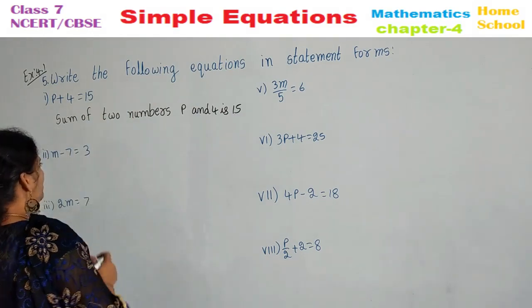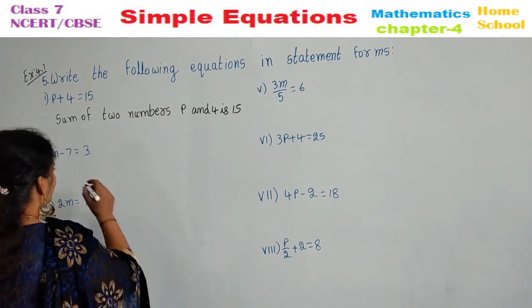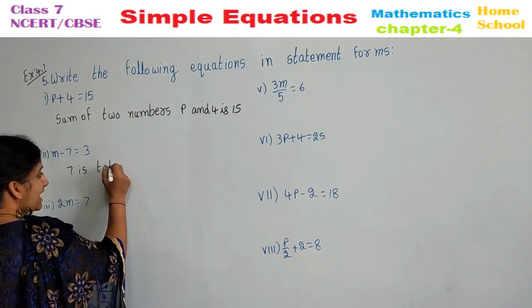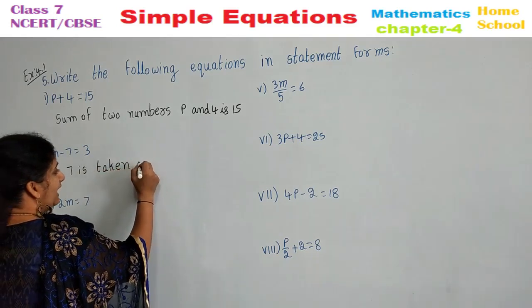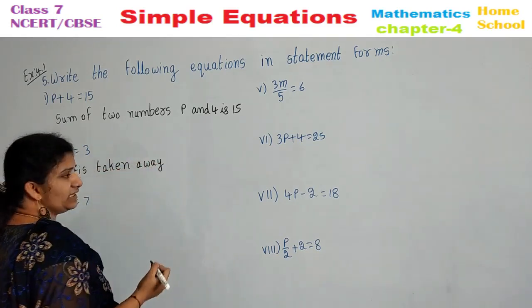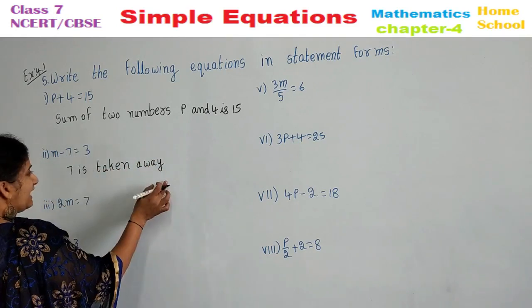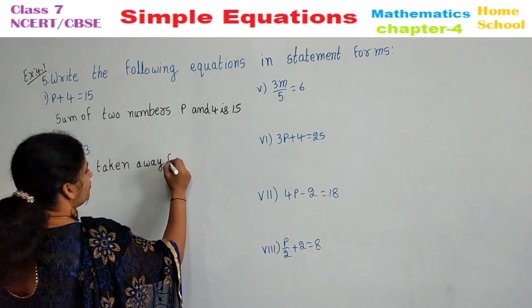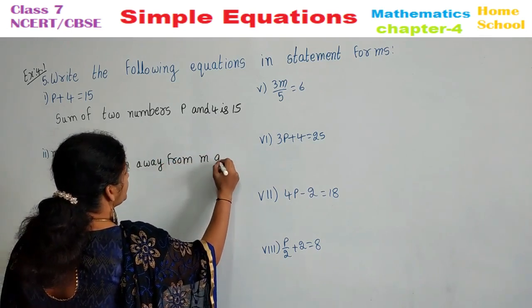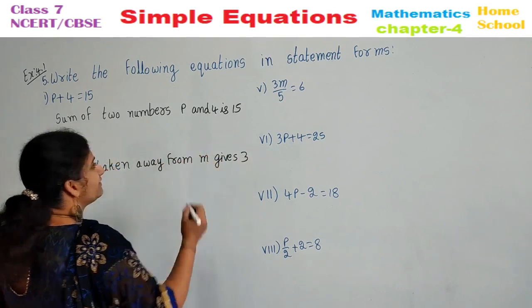See the second one: M minus 7 is equal to 3. 7 is subtracted — you can also say 'taken away' — 7 is taken away from M gives 3.